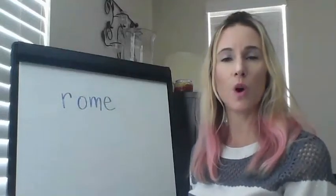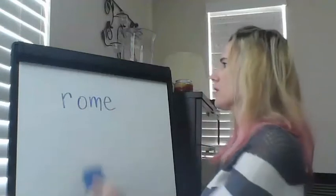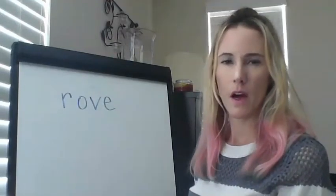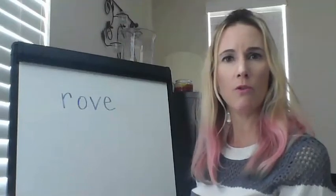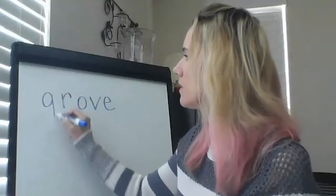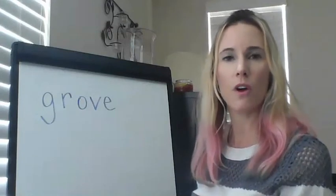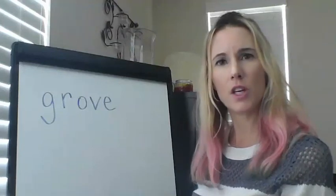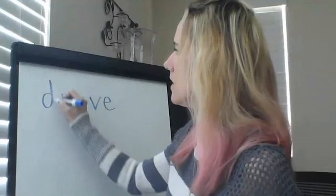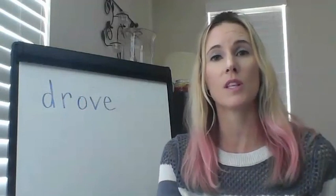Roam is going to change to rove — roam, rove. Go ahead and make the change. Where do you hear the sound change? Out goes the M, in goes the V. Rove. Now I want rove to change to grove — rove, grove. This time we have a sound addition; we're adding a sound. All we need to do is put our G in front. Grove. Now grove is going to change to drove — grove, drove. Think about that sound change. Out goes the G, in goes the D. So this was some practice with your long O sound, doing some sound changes with words that will be in your story this week.